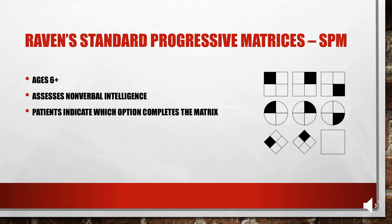Raven's Standard Progressive Matrices, abbreviated SPM, is a measure of nonverbal intelligence designed for ages 6 and up. Kind of like matrix reasoning on the WISC or WAIS, patients have to indicate which option completes the matrix. Instructions are very simple and can even be pantomimed, so patients can progress through these matrices even with poor hearing, speech delay, physical disabilities, or limited English proficiency — that's what you want to know for the EPPP.